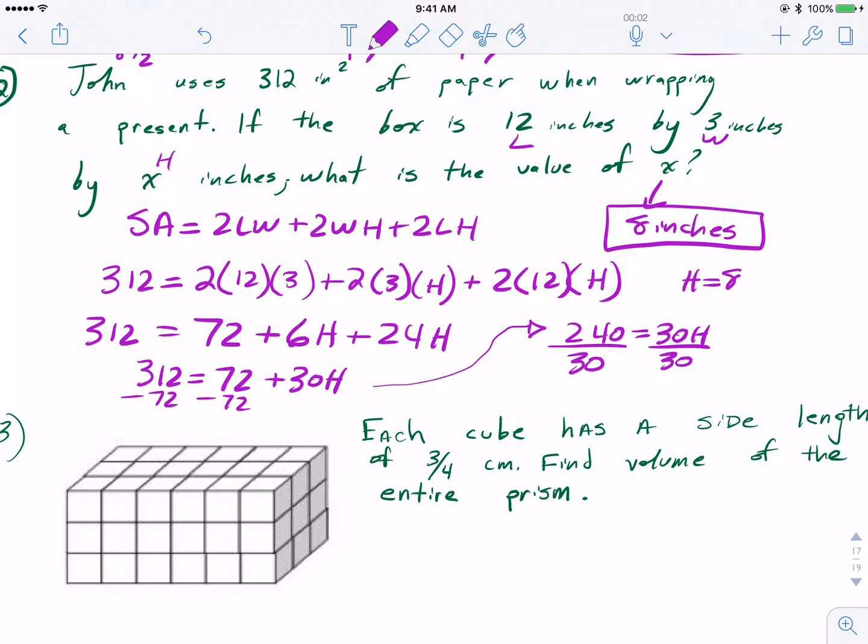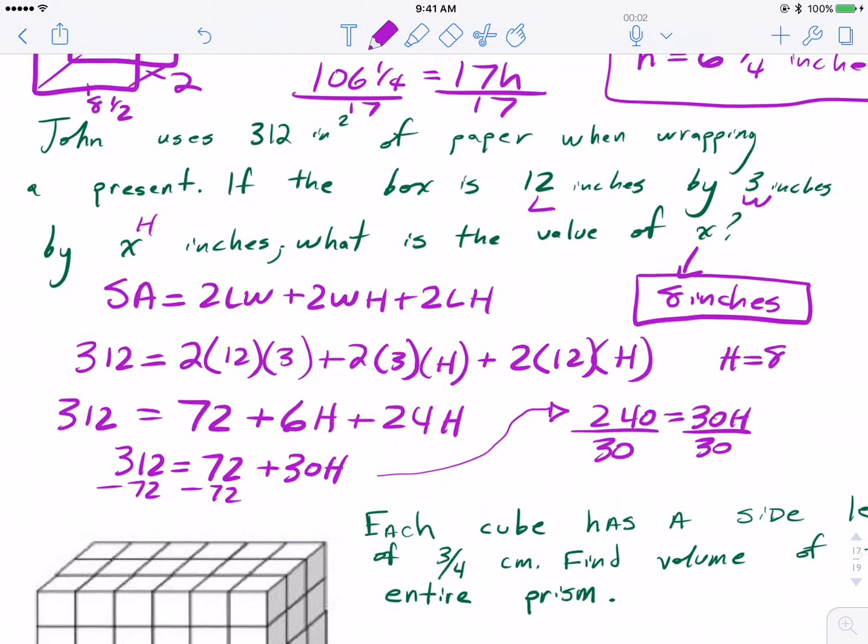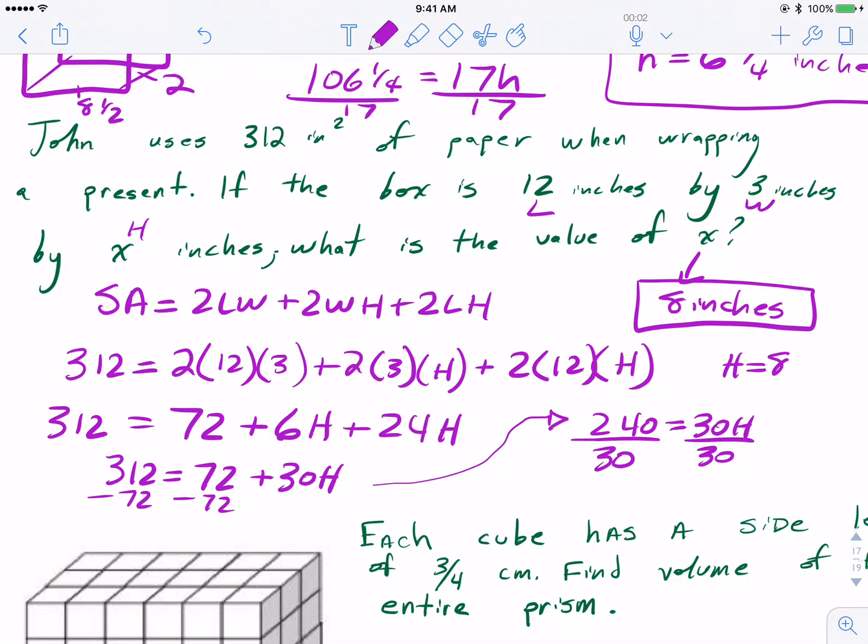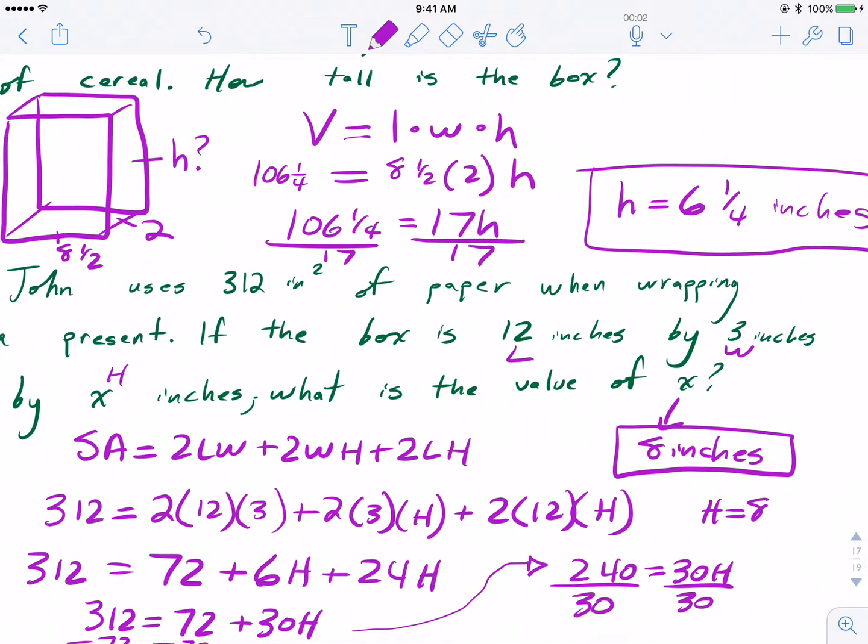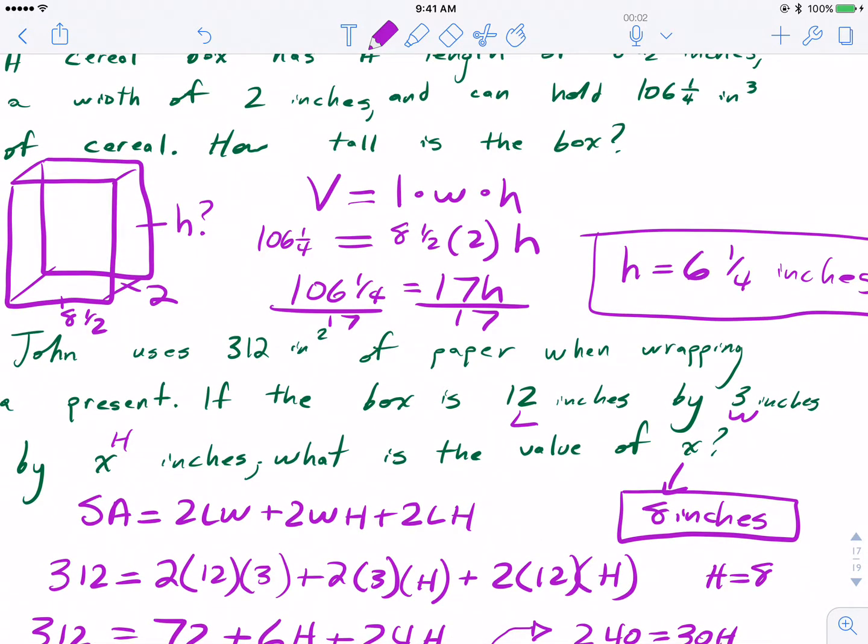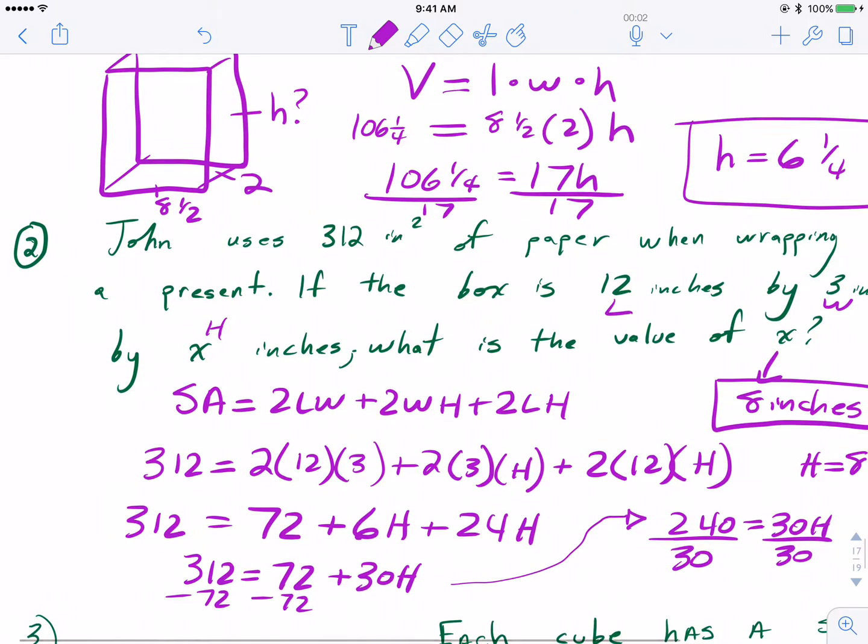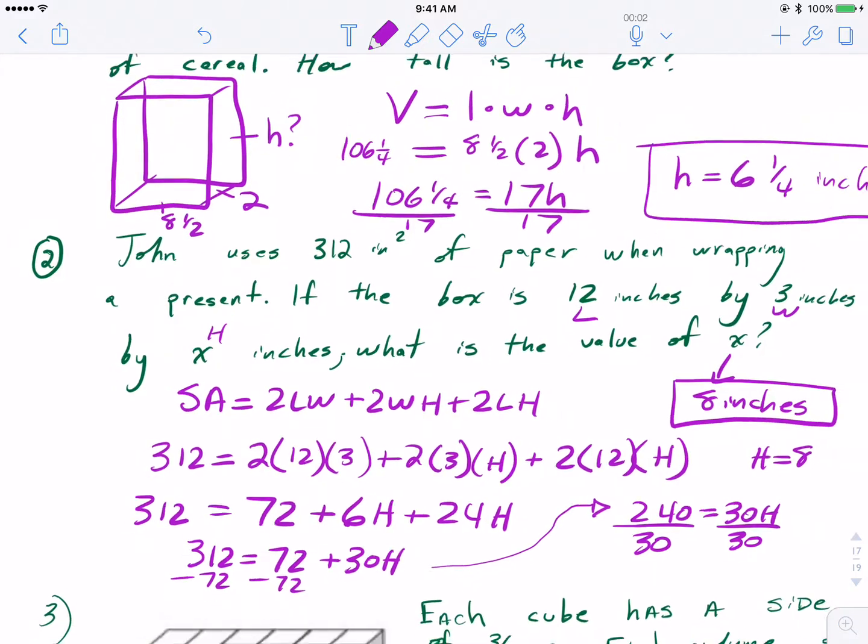So once again, with problems related, word problems like this, or application style questions, use what you know. This one could be a little confusing if you didn't just jump right into the formula. Maybe drawing a diagram can help you, and then figuring out, okay, I know the 12 by 3, so you take out that 72, and then start piecing together the unknown. Whatever I pick out right away, okay, it's volume, write down the formula. For number 2, it was surface area, write down the formula, and go from there. Plug in what you know, try to find out what you need to know, and kind of keep moving.